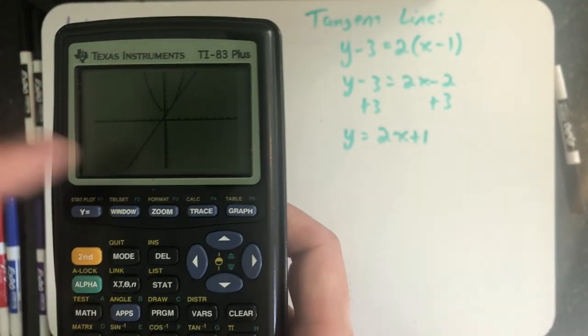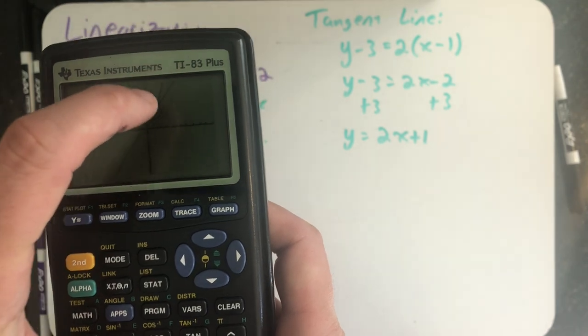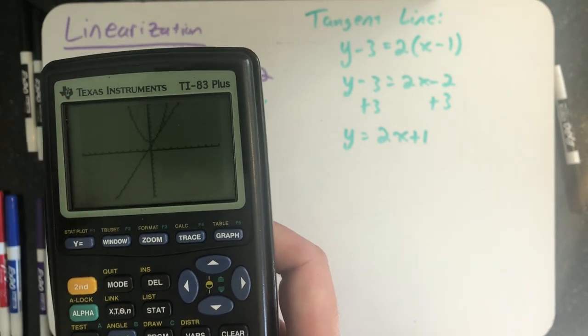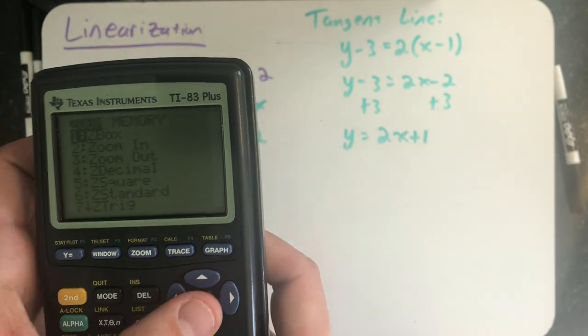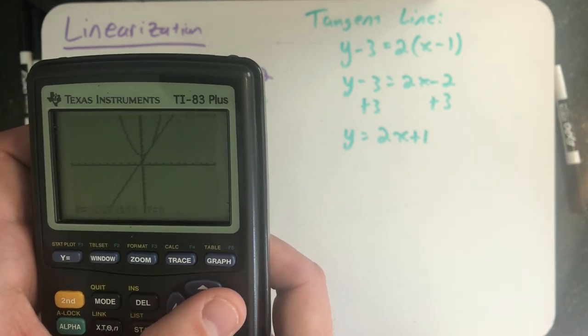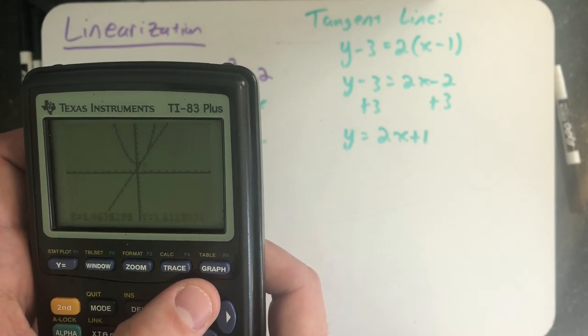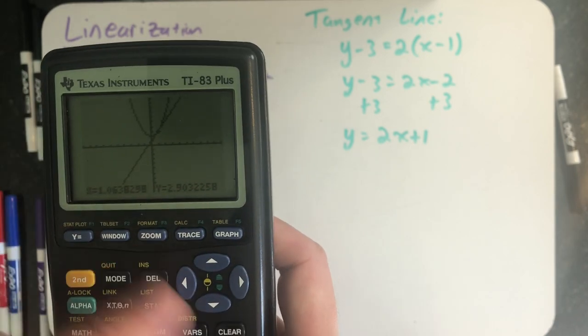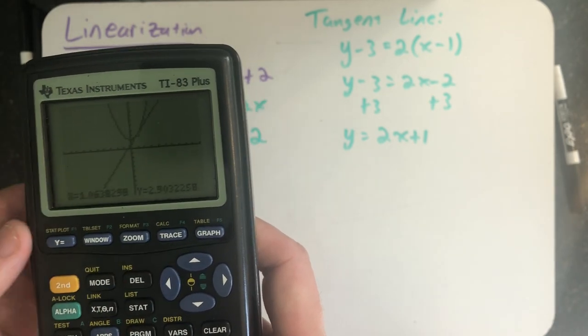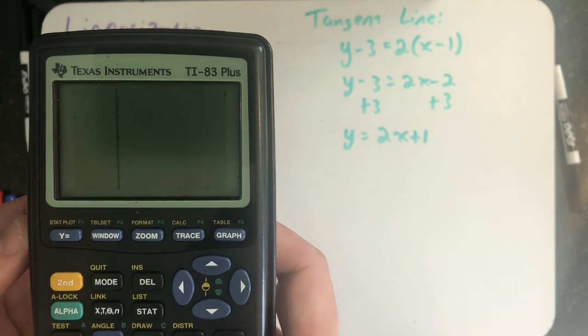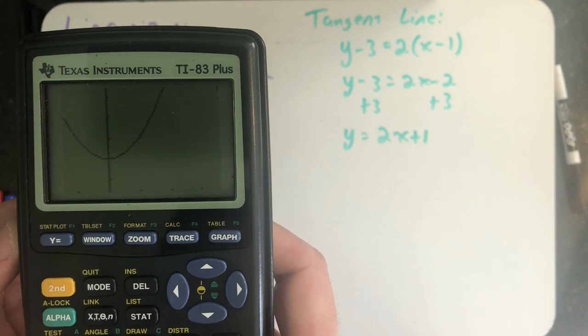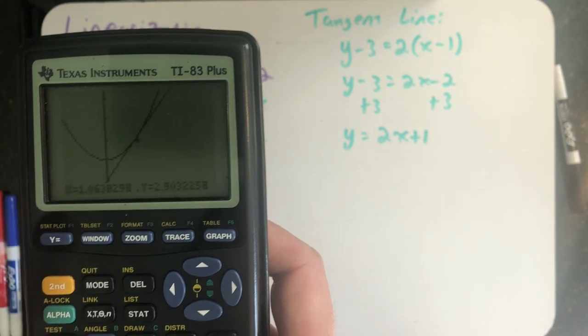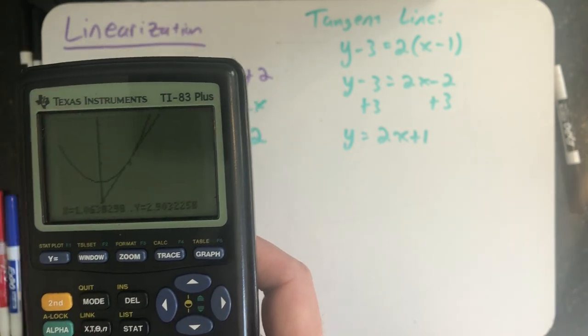I see my tangent line comes up and hits the parabola right in that spot. I want to zoom in on the point 1 comma 3, or at least close to it. So I'll zoom in right on that spot by moving my cursor with the arrow keys until I'm around the point 1 comma 3. I zoom in, just looking a little bit closer, and I see that my tangent line comes and hits my function.